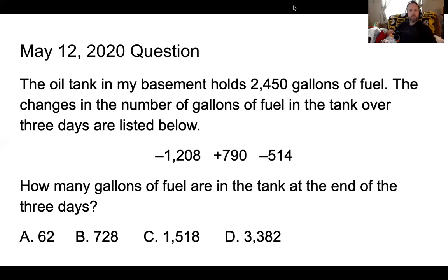So for today's question it says the oil tank in my basement holds 2,450 gallons of fuel. The changes in the number of gallons of fuel in the tank over three days are listed here: negative 1,208, positive 790, and negative 514 gallons. So looking just at this before I get onto the rest, I see that I'm starting with a tank that holds 2,450 gallons. Assuming that this is a full tank, in three days it has gone down 1,208 gallons, up 790 gallons, and down 514 gallons.